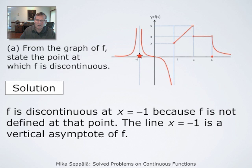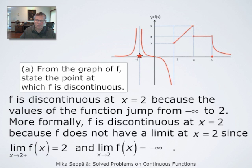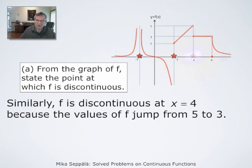Next, the point x = 2 is clearly a discontinuity because at that point the values of f jump from negative infinity to 2. So here we have the second point of discontinuity, corresponding to x = 2. The third point of discontinuity is at x = 4, where the values of the function again jump, and therefore this is a discontinuity.